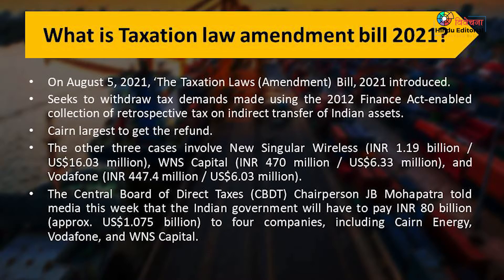What happened was there was a company named CanEnergy and another named Vodafone. Vodafone actually bought the shares of Hutchinson, a company based in the United Kingdom. The agreement between the two companies took place outside India, but the property of Vodafone resided in India. That is why the UPA government in 2012 wanted to tax that particular property.